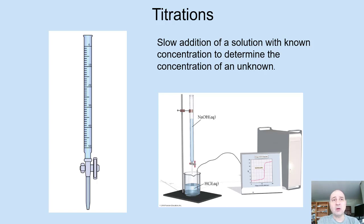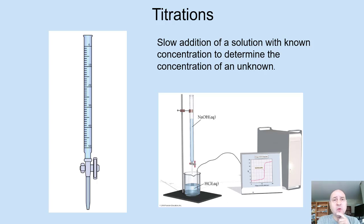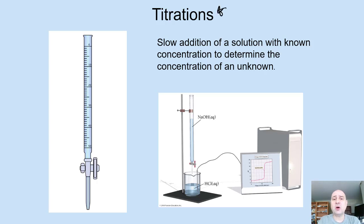Let's say we have some orange juice from the store and we want to know how much vitamin C is in there. Vitamin C is an acid called ascorbic acid, and we want to know its concentration. So we don't know the concentration and we want to prove it. These procedures are called titrations, and they work not just for acids and bases, but for many different kinds of reactions.